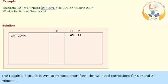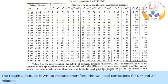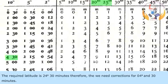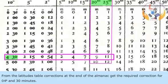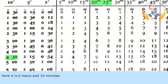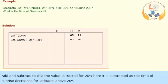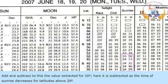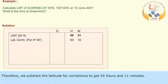The required latitude is 24 degrees and 30 minutes. Therefore, we need a correction for 04 degrees and 30 minutes. From the latitude correction table at the end of the almanac, get the required correction for 04 degrees and 30 minutes — here, it is 0 hours and 10 minutes. Add or subtract this to the value extracted for 20 degrees. Here, it is subtracted as the time of sunrise decreases for latitudes above 20 degrees. Therefore, we subtract the latitude correction to get 05 hours and 11 minutes.